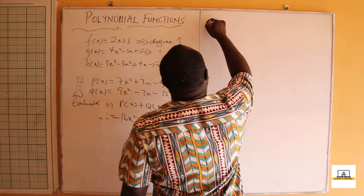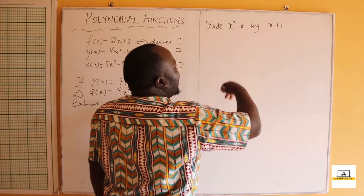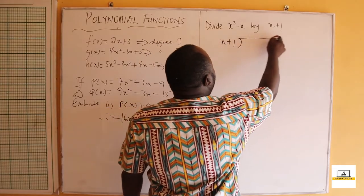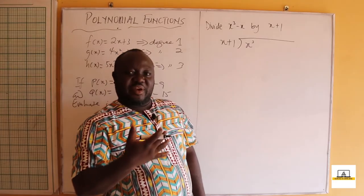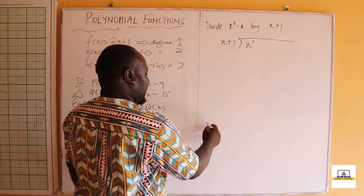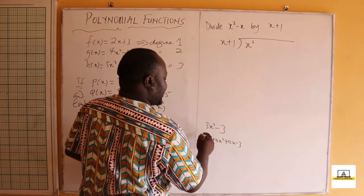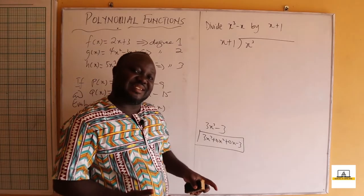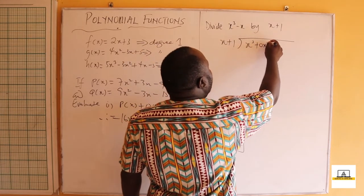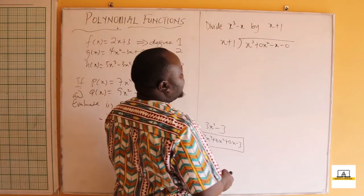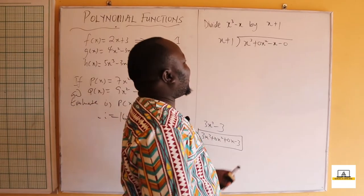Now for division — let's divide x³ - x by x + 1. Setting up the long division, note that x³ - x has no x² term and no constant, but those terms exist with zero coefficients. So x³ - x is written as x³ + 0x² - x + 0, making all placeholder coefficients explicit before we begin dividing.